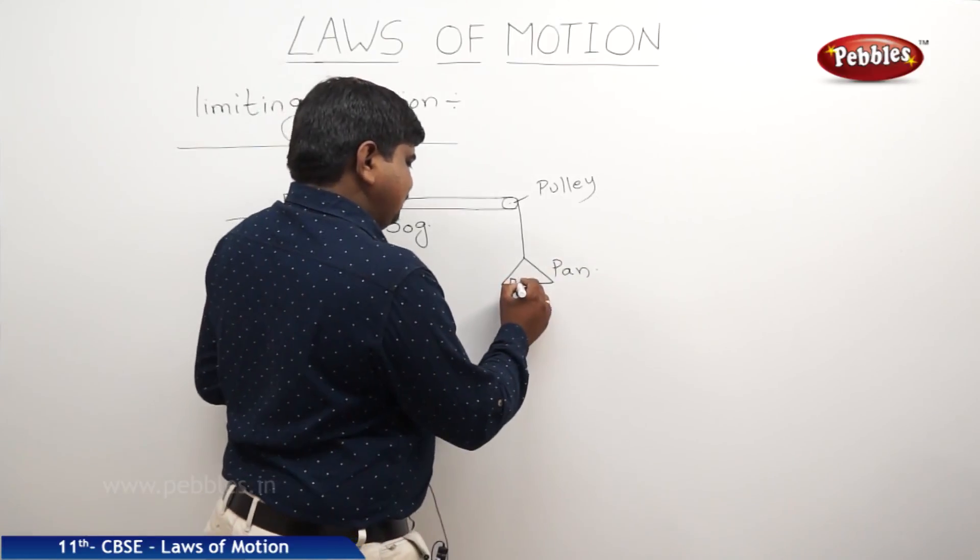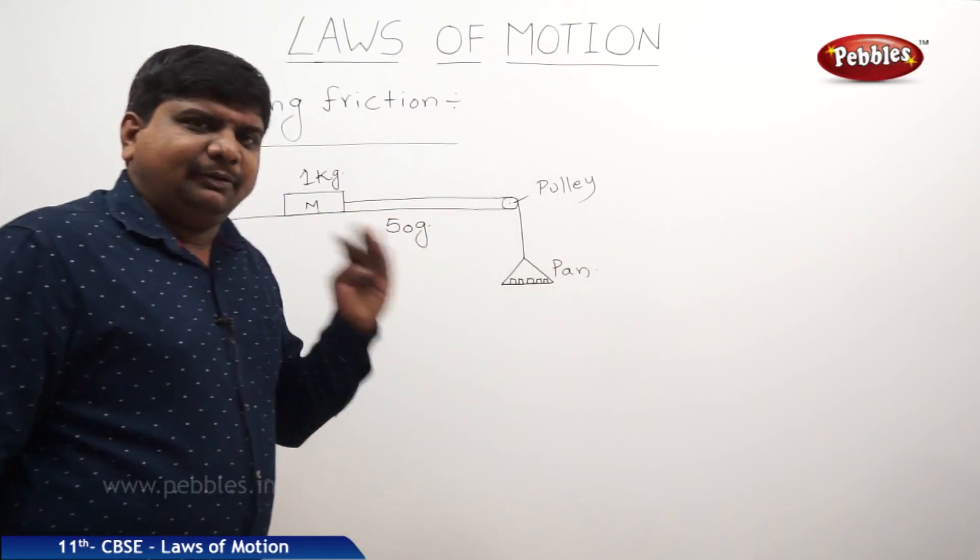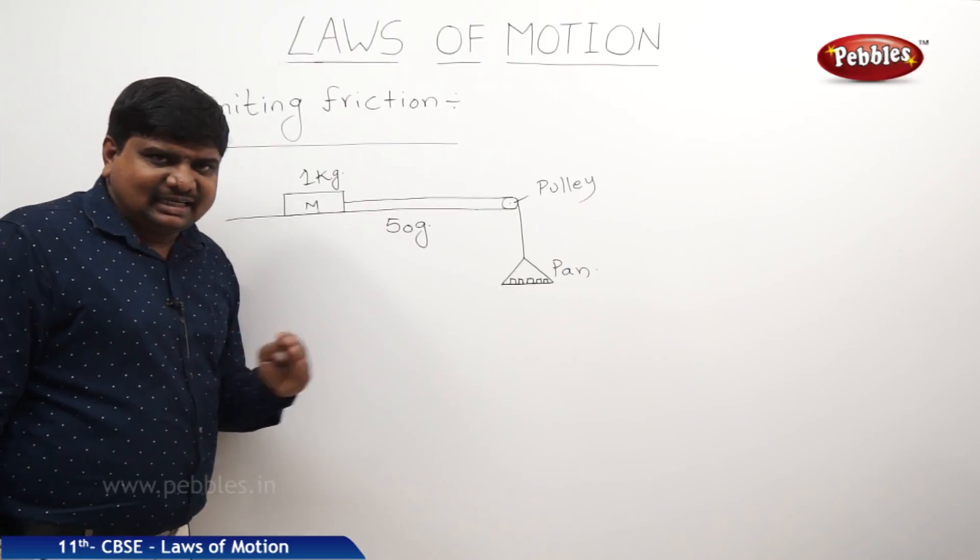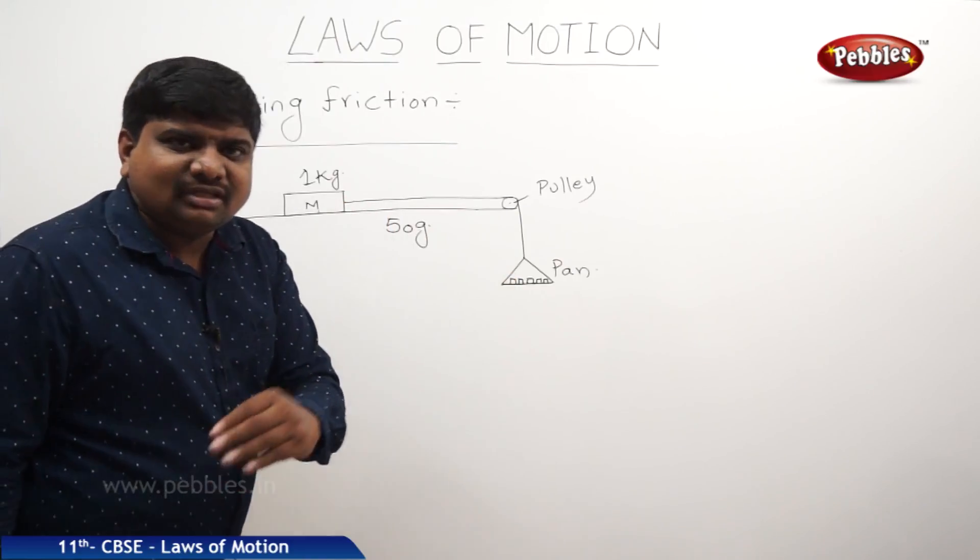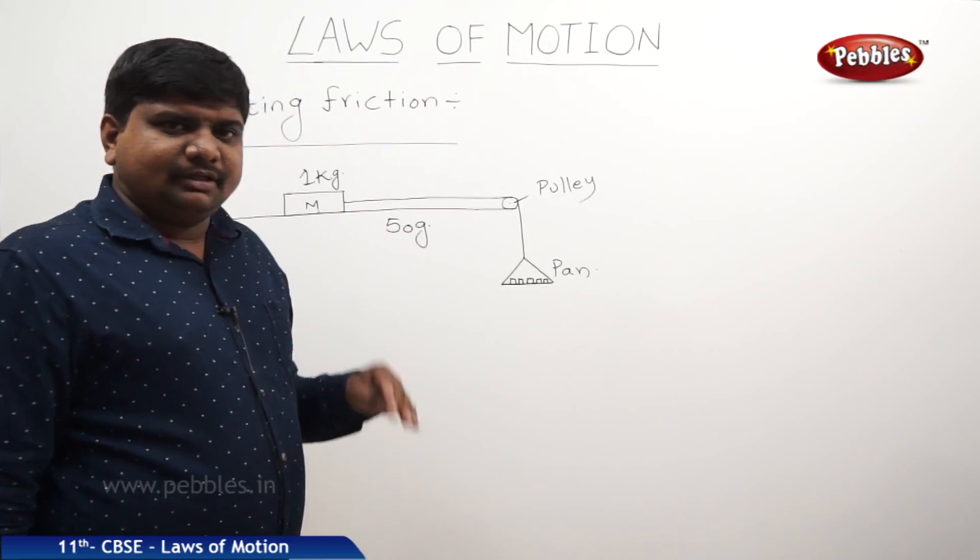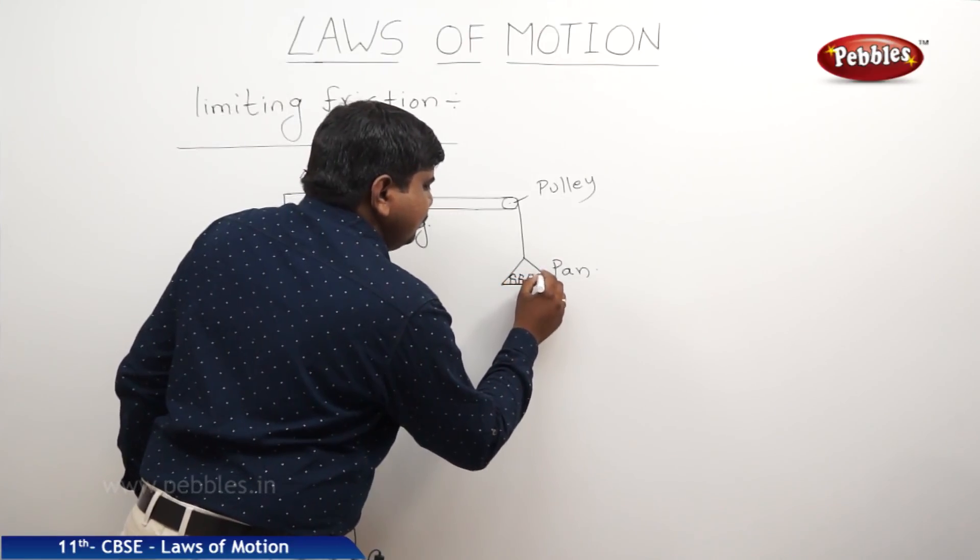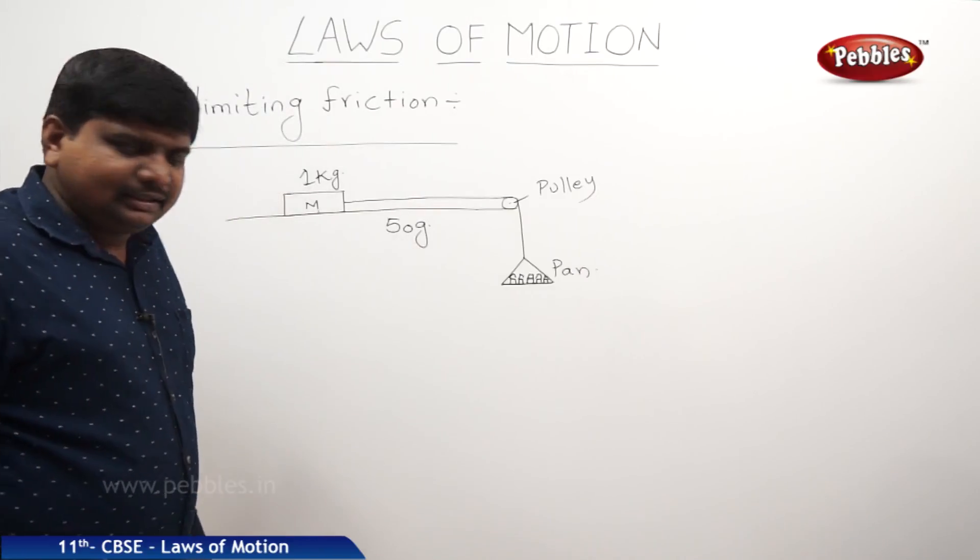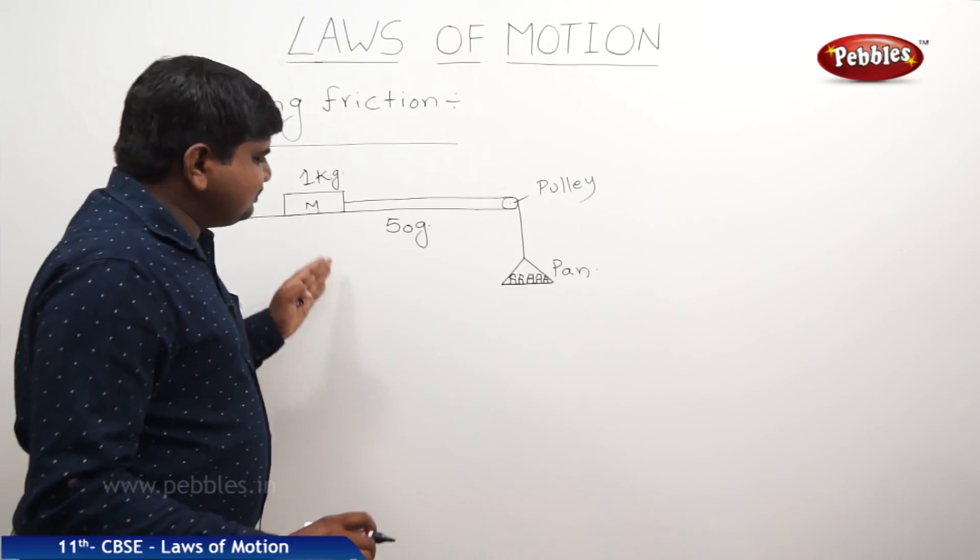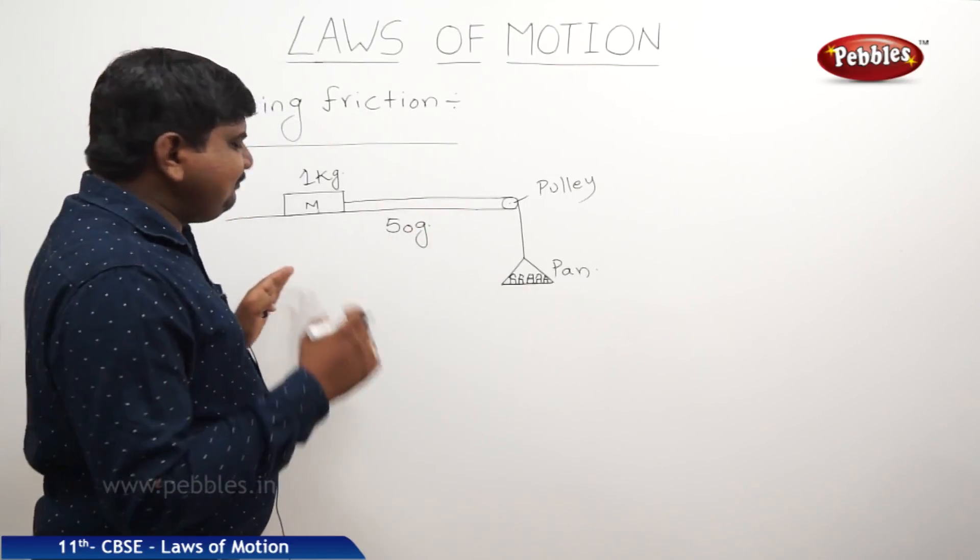So I am keeping, I am keep on adding the weights like this, up to some weights, means exactly which is equal to the nearest of the 1 kg like some 1000 grams or some 1050 grams the body won't move. That means what we can say is whenever you are doing your best to move the body, there is a friction, nothing but the static friction which comes into play in a maximum range.